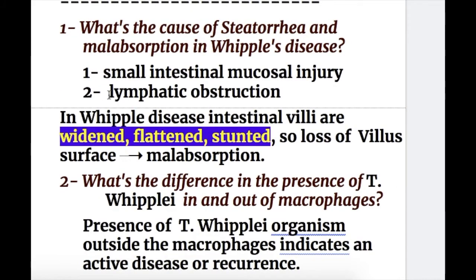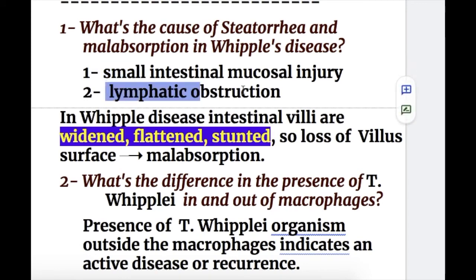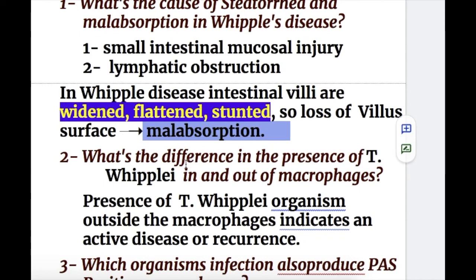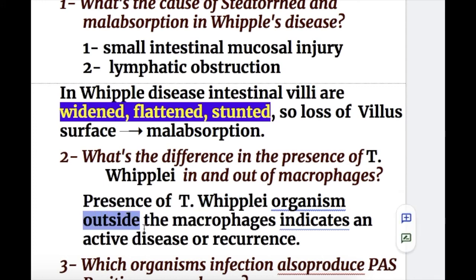Answers to the questions. Q1 — cause of steatorrhea and malabsorption in Whipple's disease: number one, intestinal cells are injured, and number two, lymphatic obstruction. Intestinal villi are wide, flat, and stunted, causing loss of villus surface and malabsorption. Q2 — presence of T. whipplei outside the macrophages indicates an active disease or recurrence of the disease.